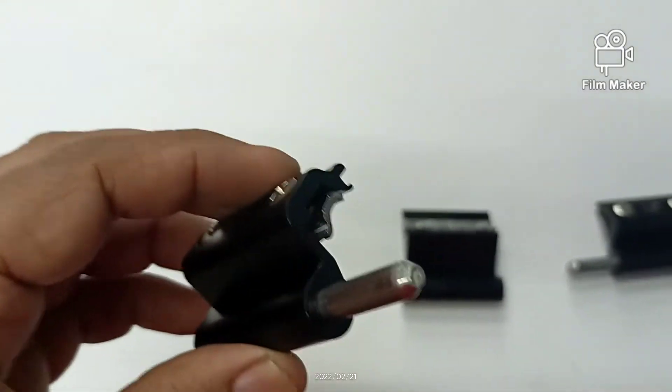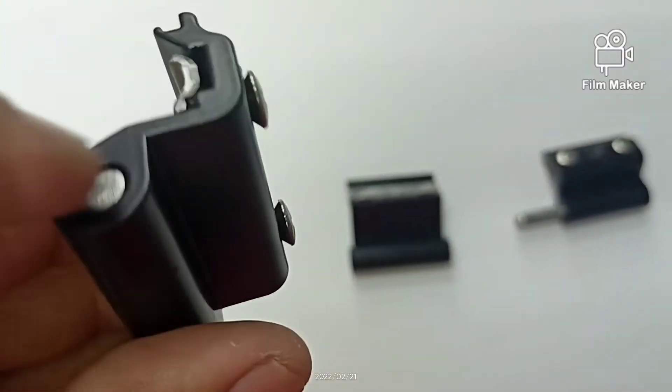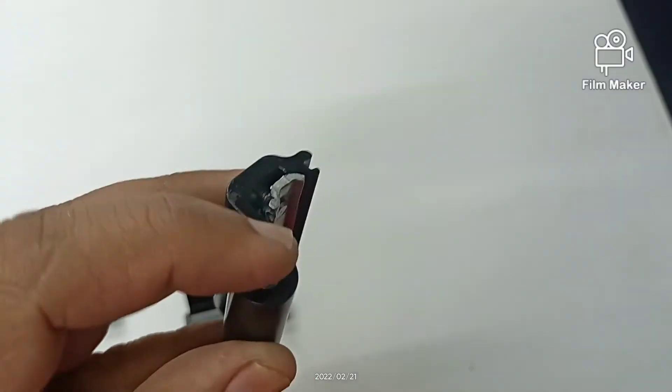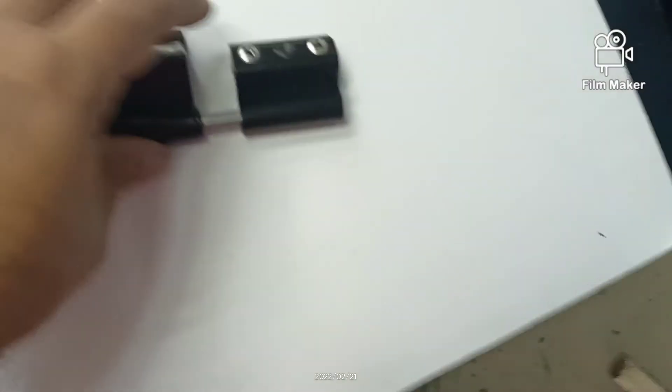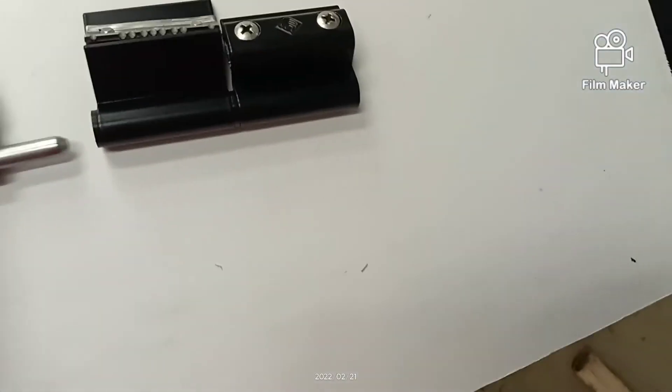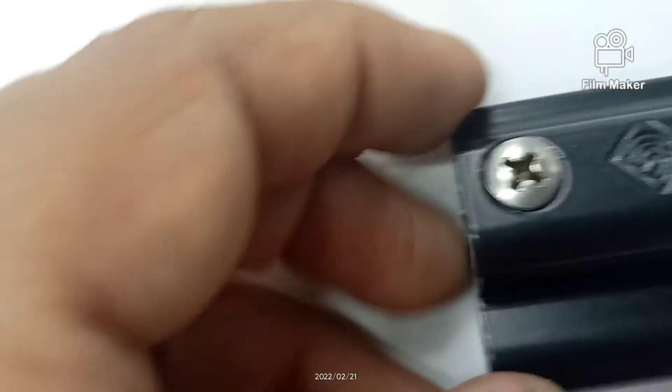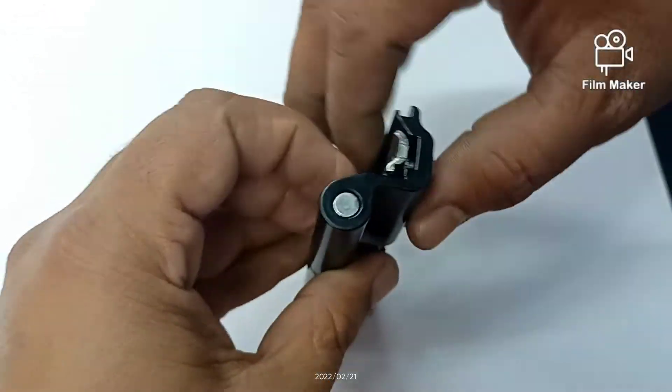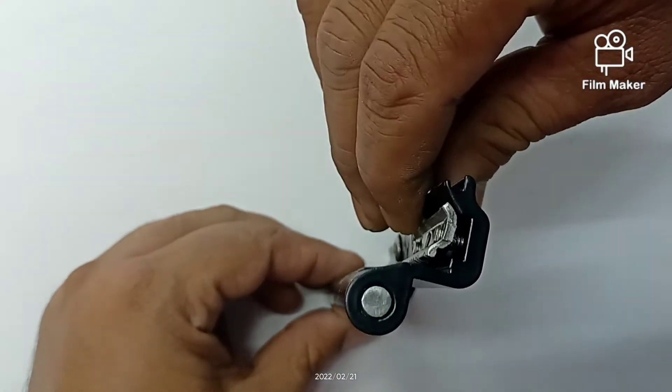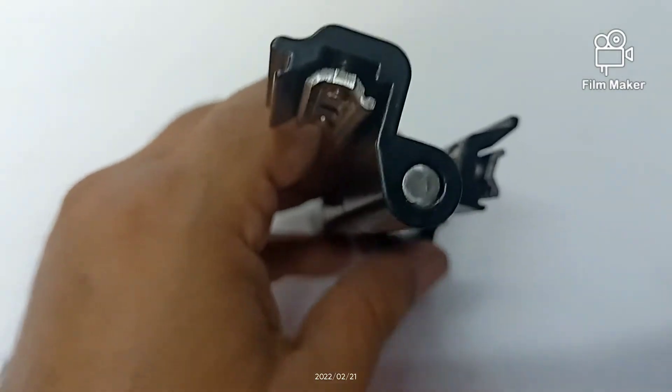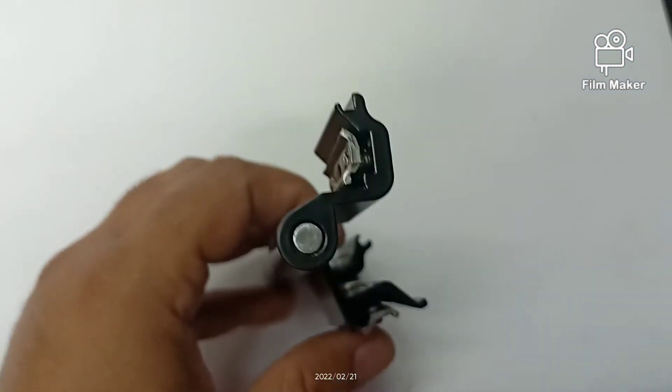After assembling this, you have to make sure this is flush here and this part flush here. After putting the assembly, there should be no gap in the center. There shouldn't be any gap here or here. After fixing this, it should look like this from the top: two parts on one side and the other part like this. We will also show you after assembling in the shutter.